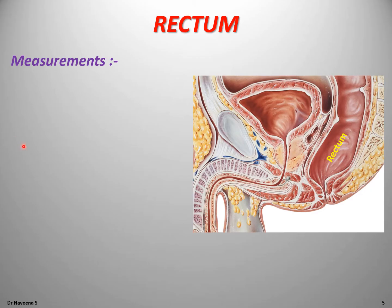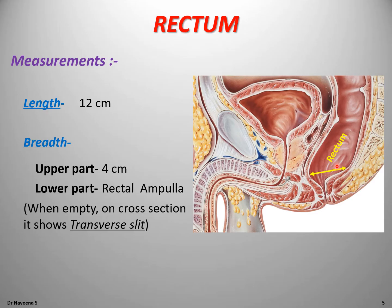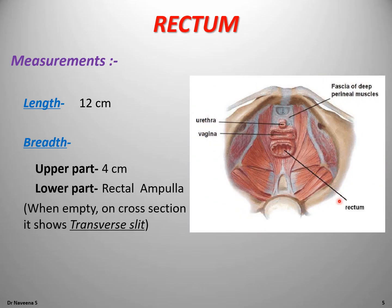Measurements of the rectum: it is 12 cm in length. In the upper part it shows 4 cm breadth, and in the lower part it is dilated to form the rectal ampulla. When the rectum is empty, it shows a horizontal or transverse lumen on cross section.